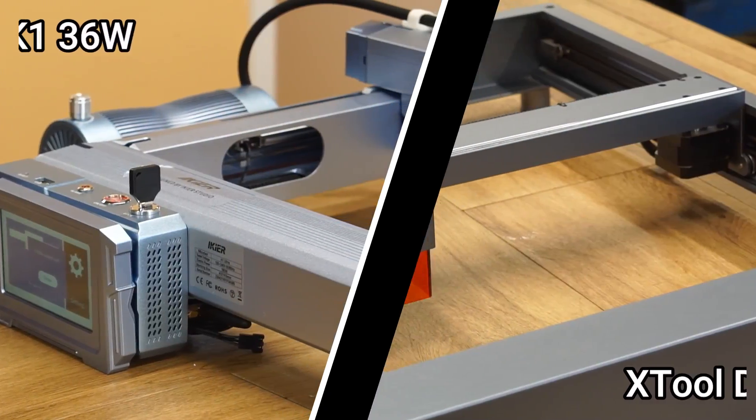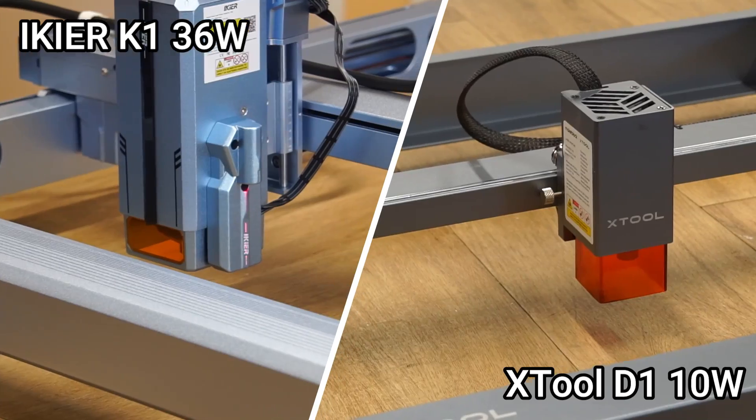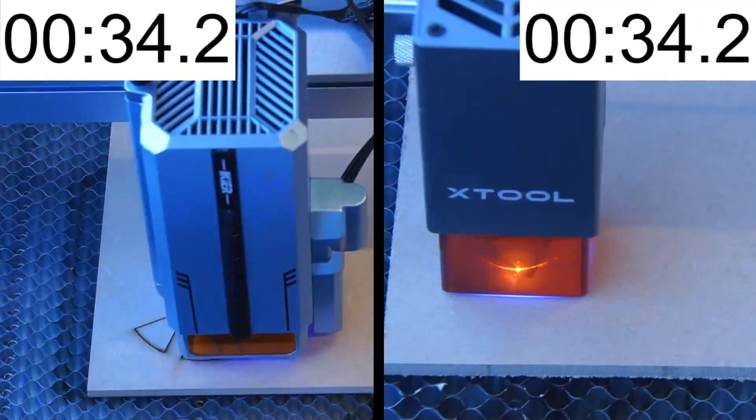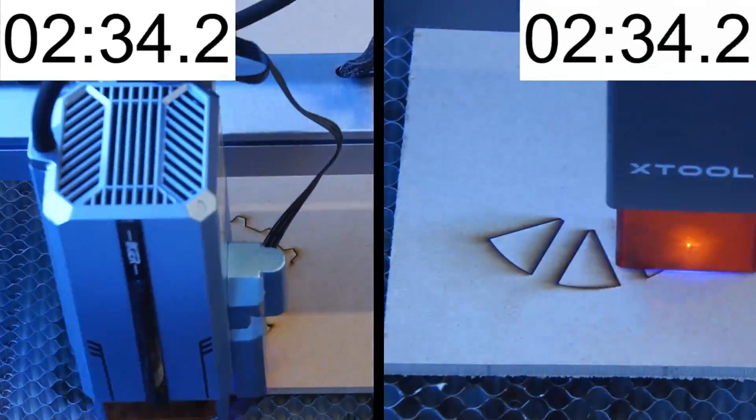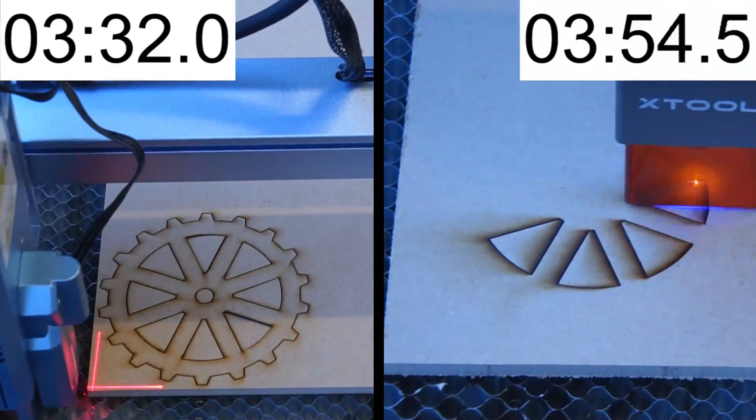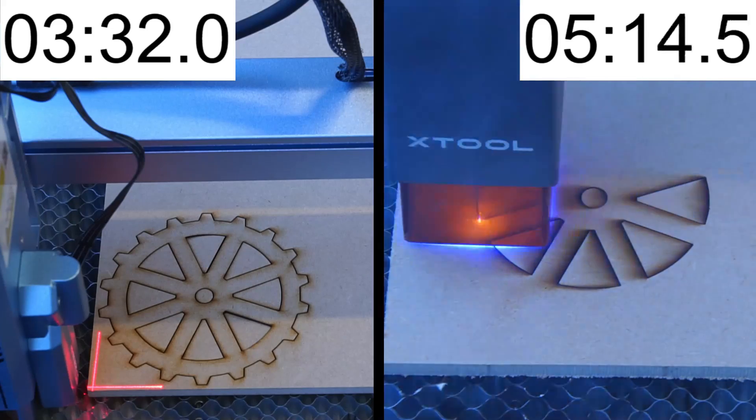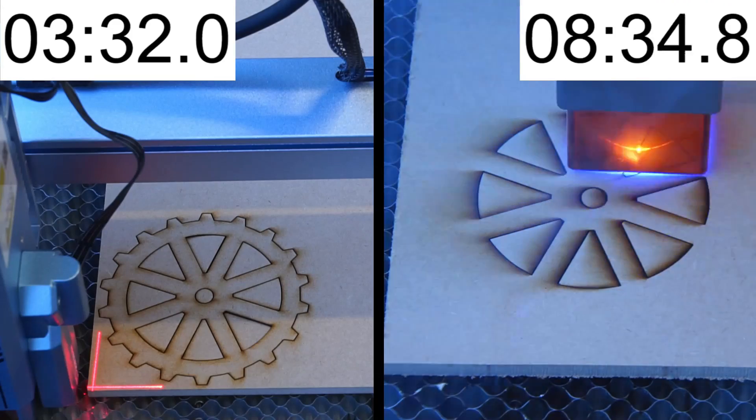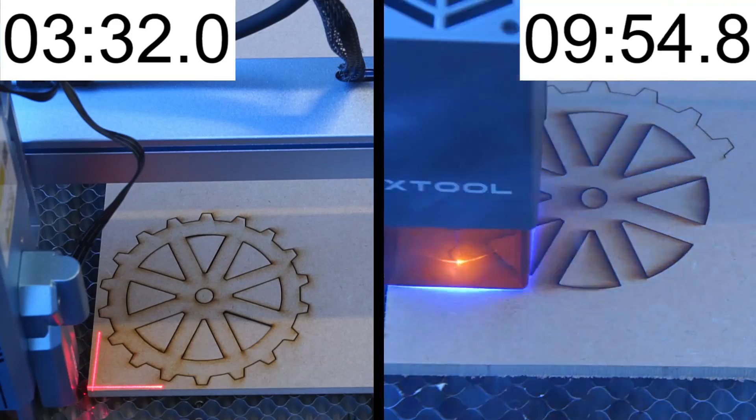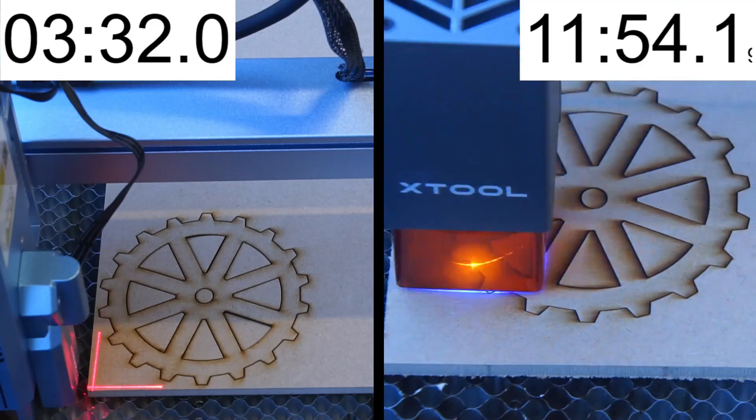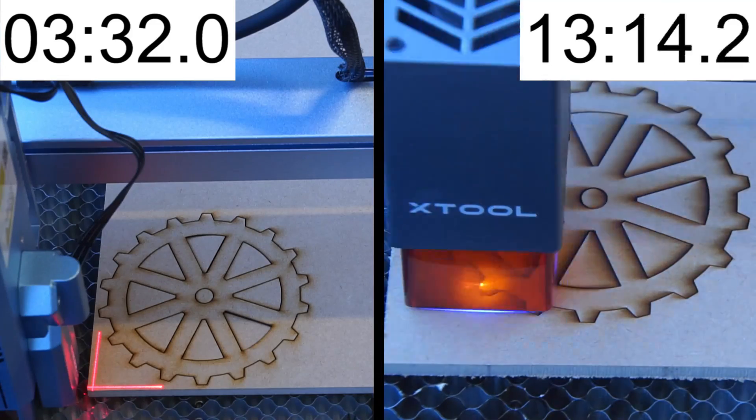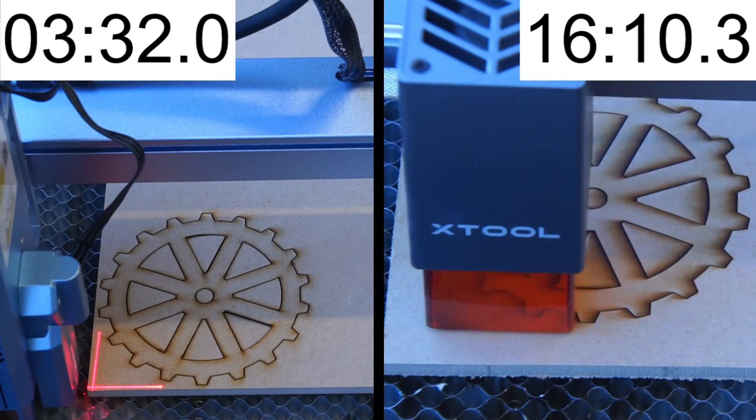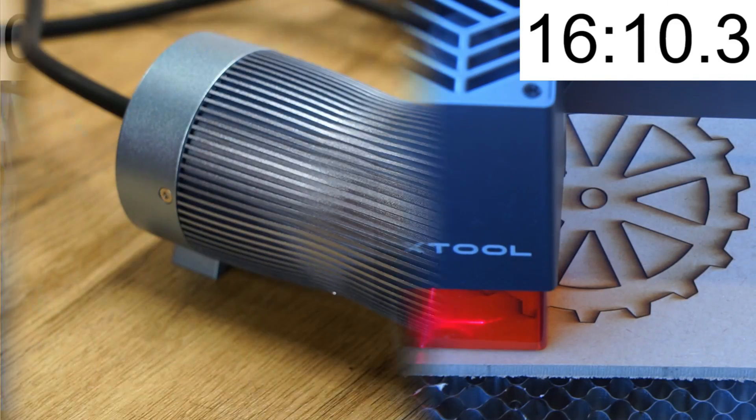Now for context let's compare the cut time to the X-Tool D1 10W laser machine. Diode laser cutters are rapidly evolving with every generation outperforming the previous. Since the K1 has 3.6 times the power output of the D1 you won't be surprised that it easily won. However you might be surprised to learn that although the power output is 3.6 times more, in terms of cutting performance it's almost 5 times faster. And this is partly due to the air compressor assist.